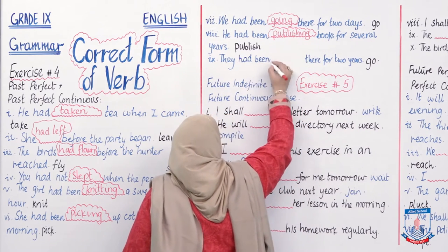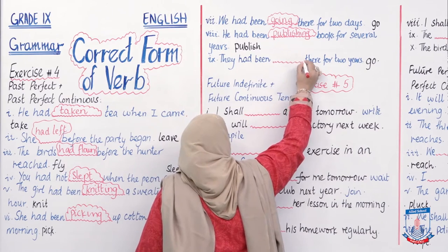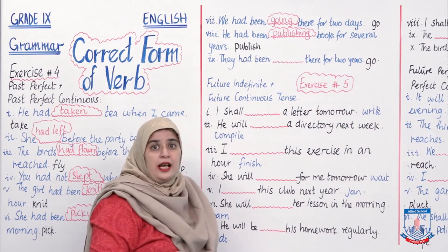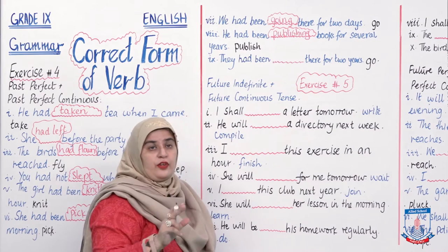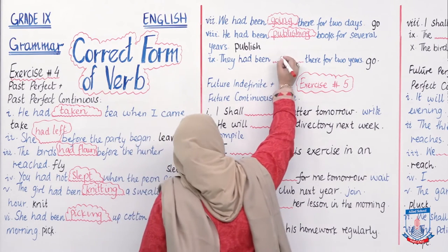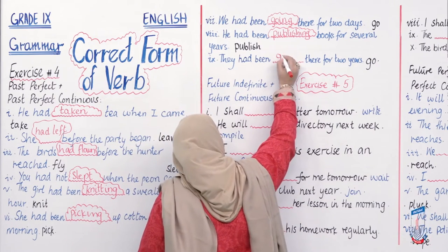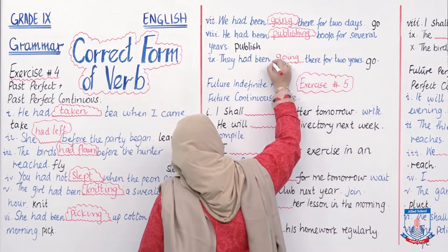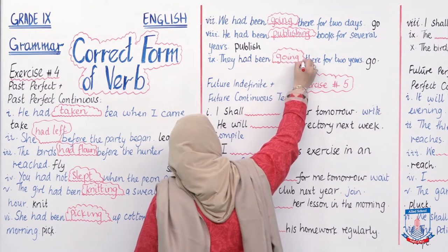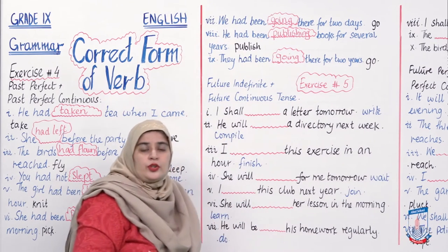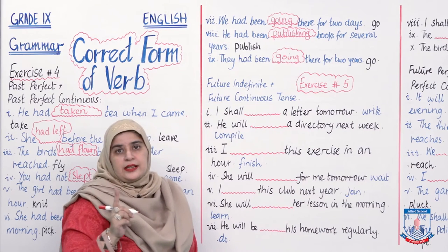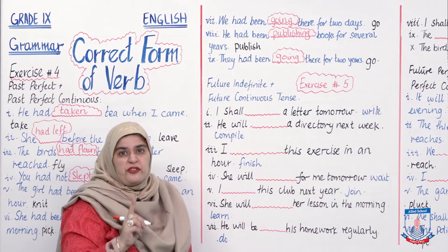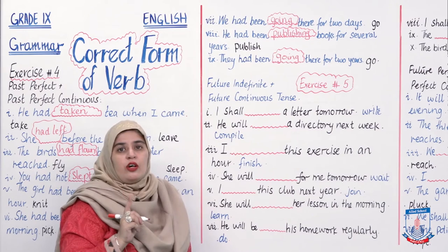'They had been ___ there for two years.' Har saal ya specific intervals pe wahan jaate hain. Answer: 'They had been going there for two years.' This was Exercise 4, relating to past perfect and past perfect continuous.